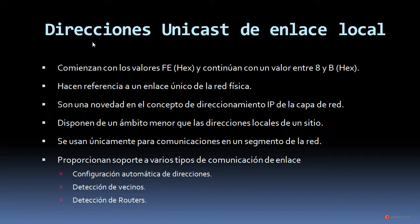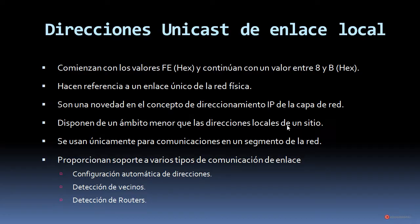El otro grupo son las direcciones únicas de enlace local, que comienzan con los valores FE en hexadecimal y continúan con un valor entre 8 y B. Hacen referencia a un enlace único de la red física y son una novedad en el concepto de direccionamiento IP de la capa de red, ya que no existían hasta la llegada de IPv6. Disponen de un ámbito menor que las direcciones locales de un sitio y se usan únicamente para comunicaciones en un segmento de la red. Proporcionan soporte a la configuración automática de direcciones, la detección de vecinos y la detección de routers.